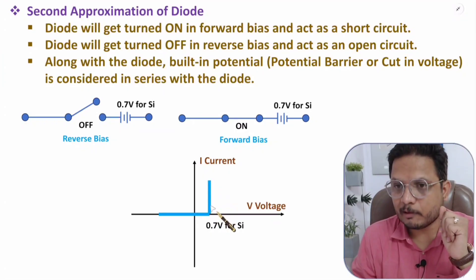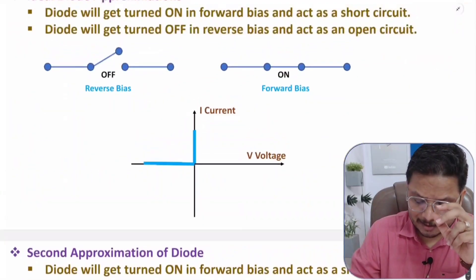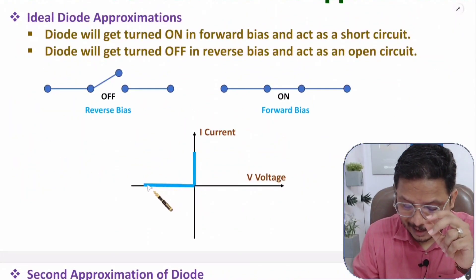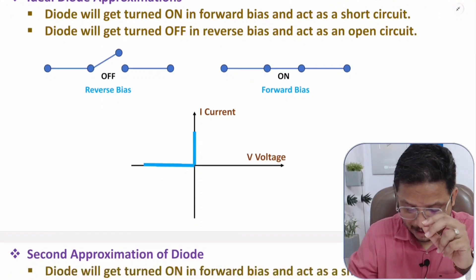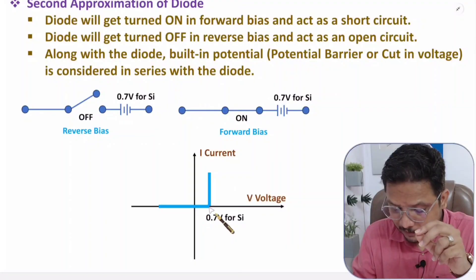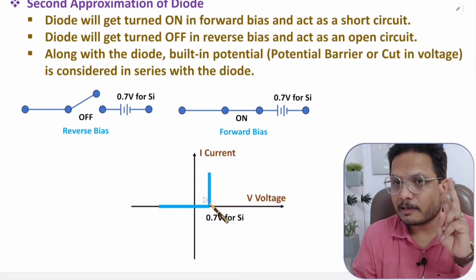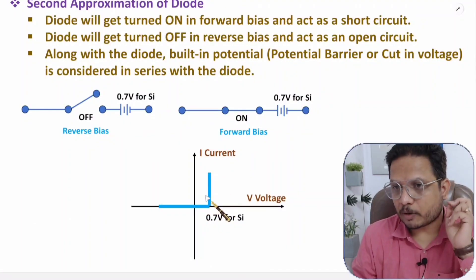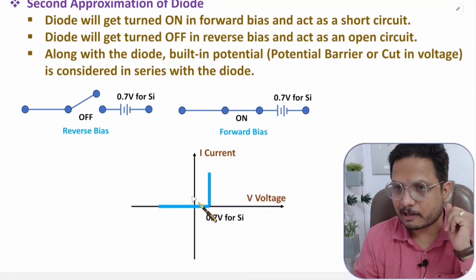Comparing to the ideal diode, the one difference in the VI characteristics is that 0.7 V stays across the diode in forward bias, and after that a huge current flows. In the ideal diode the characteristic is vertical right from zero, but with this second approximation the huge current rise happens after 0.7 V.